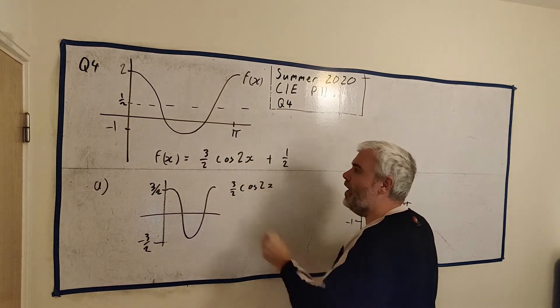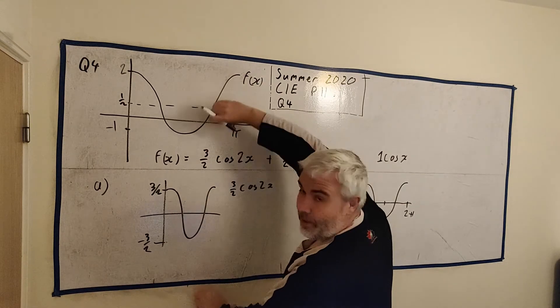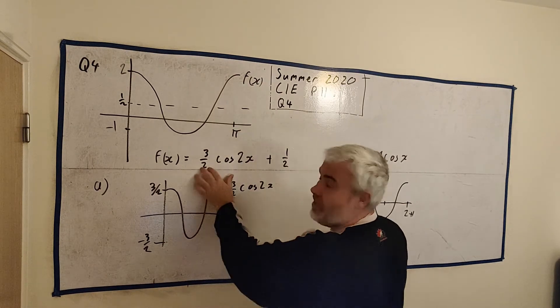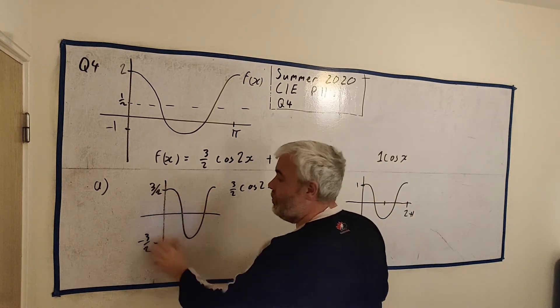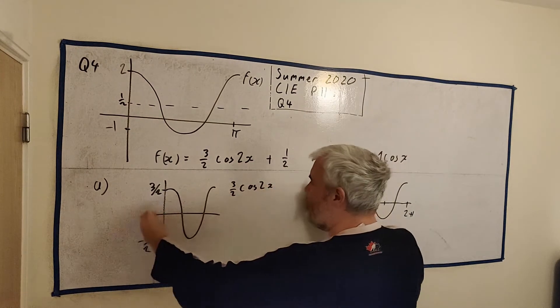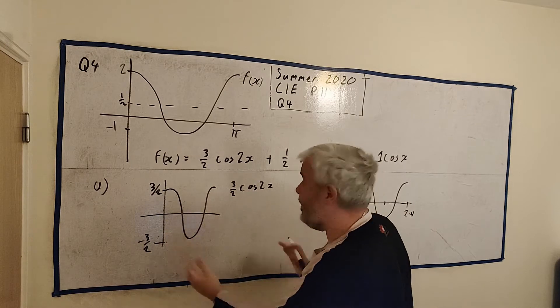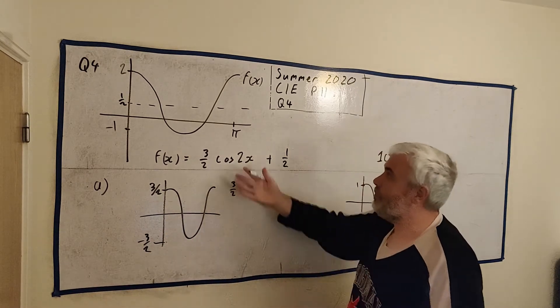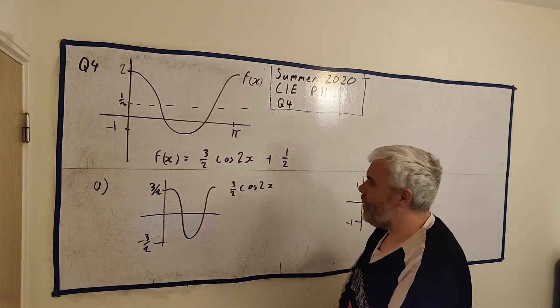This number here stretches it out on the y-axis, or shrinks it if it's less than 1. So it just gives you these new numbers. These new numbers here. And this guy here stretches or shrinks it in the x-axis. Doesn't matter in this case, because they didn't ask us any questions about it.